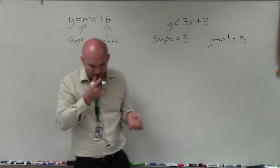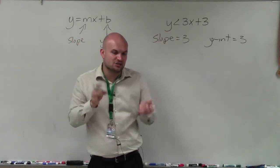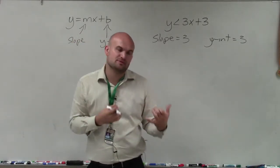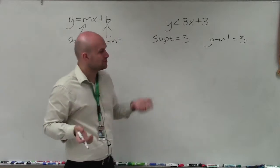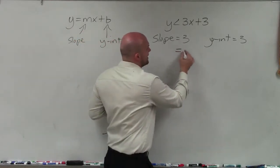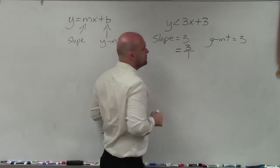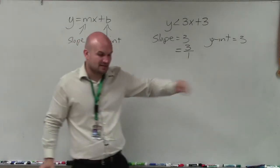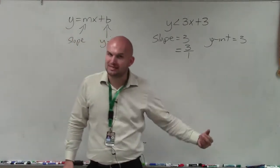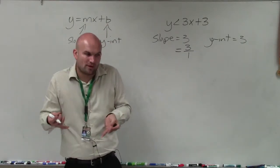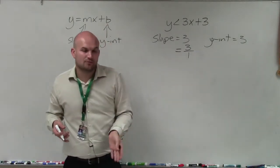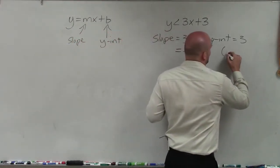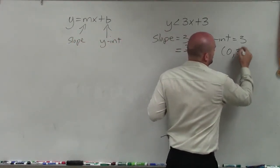It's very important to understand that slope represents the change in the y-coordinates between any two points and the change in the x-coordinates between any two points — it's a ratio. So we always want to write slope as a fraction, and if we have a whole number, we can rewrite it as 3 over 1. The y-intercept, on the contrary, represents a point where the y value is equal to 3 and the x value is equal to 0. So we write the y-intercept as (0, 3).